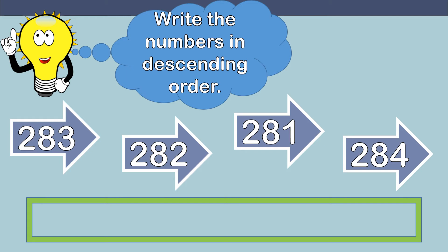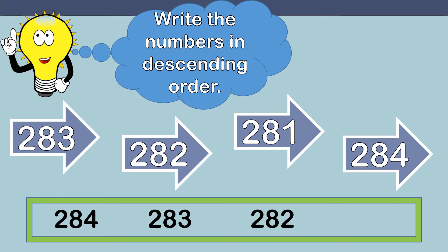Remember, when you write numbers in descending order, start with the biggest number and end with the smallest number. We should write the number 284 first because that is the biggest number. Our next number should be 283, then 282, and last 281, because that is the smallest number. We should always end with the smallest number when we are writing numbers in descending order.